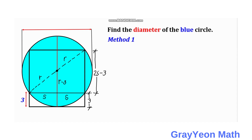Next, we use similarity of triangles. We focus on this smaller triangle, which is actually a right triangle, same as the bigger one. We use the opposite over adjacent ratio. For angle alpha in the smaller triangle, this gives us (r minus 3) divided by s.